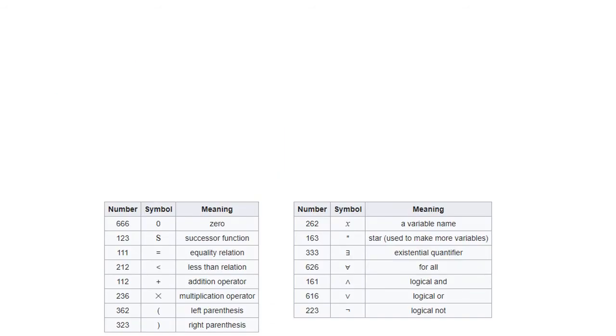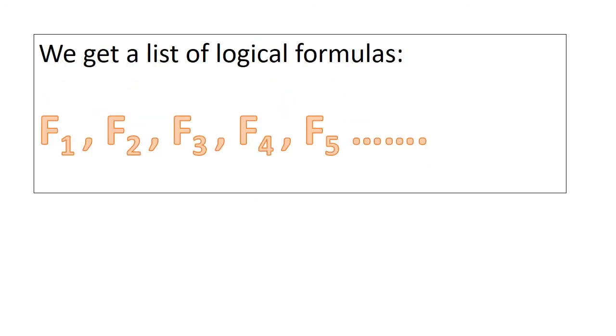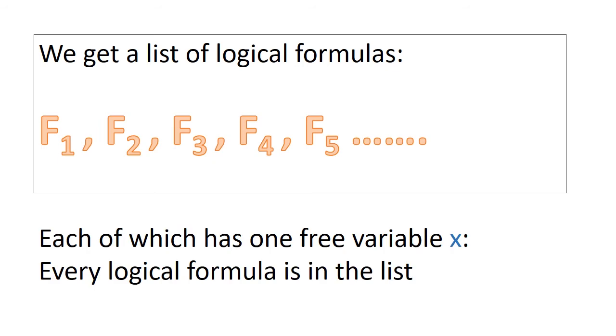Now remember that each logical formula is tied to a natural number by the Gödel numbering, so we can arrange all formulas which take one free variable as input in ascending order of its Gödel number. This way we create a list of logical formulas with one free variable such that every logical formula with one free variable is in that list. Again, they are functions over natural numbers. So not only are they indexed by natural numbers, they also take natural numbers as arguments.